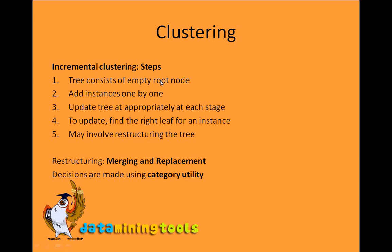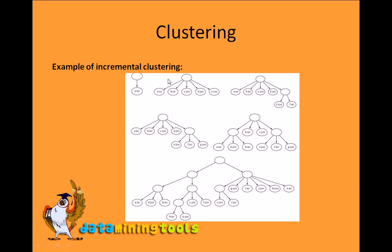The steps of incremental clustering: initially the tree consists of an empty node. We add instances one by one, and after each instance is added we update the tree appropriately. To find the right leaf for an instance, we use a factor called category utility. The update may involve restructuring the tree, and the only two things we do in restructuring are merging and replacement. At each step we calculate whether we should add an instance as a child of an existing node, and at what level — this is determined by category utility.